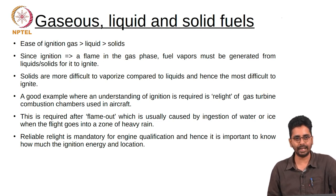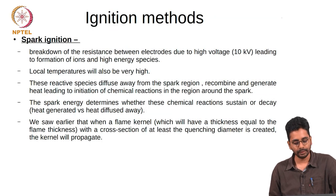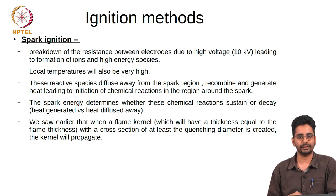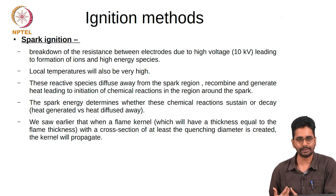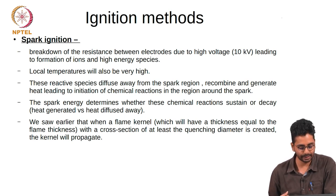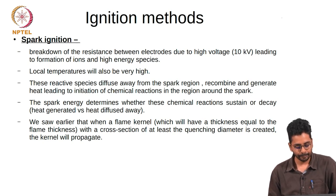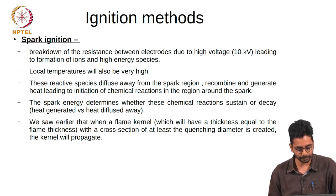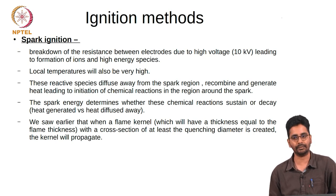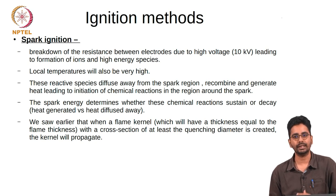The most common ignition method is spark ignition. Breakdown of resistance between electrodes due to high voltage leads to formation of plasma, ions, and high-energy species in a localized zone. These reactive species diffuse away from the spark region, recombine, and generate heat, leading to initiation of chemical reactions around the spark. The energy of the spark must be sufficient to sustain flame propagation. If the energy is less than a critical value, there will be local ignition but not enough energy for the flame to propagate and ignite the surrounding mixture.